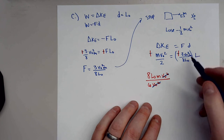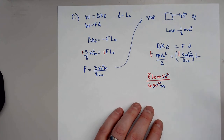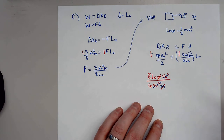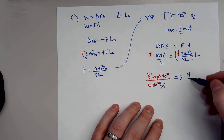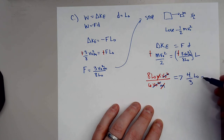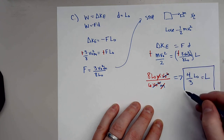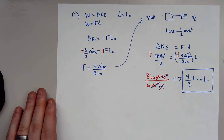After the mass terms cancel out, this works down to L equals four over three L naught. So if the block were roughly 133 percent larger — or 4/3 of the original thickness — it would actually stop this bullet.